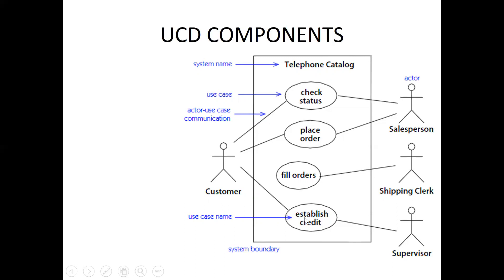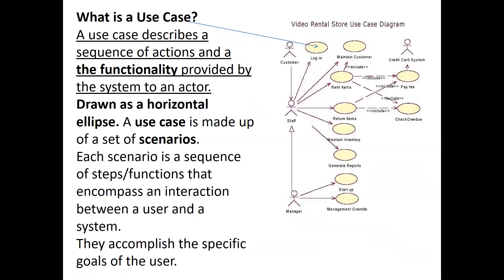Make sure that when you put the name of the use case in the use case symbol, which is the ellipse. The use case describes a sequence of actions or functionality provided by the system to the actor. The actors are the customer, the staff, the manager, and the credit card system. They're drawn as horizontal ellipses, and the use cases make up a set of scenarios — each scenario is a sequence of steps and functions that encompass an interaction between a user and a system, accomplishing a specific goal of the user.